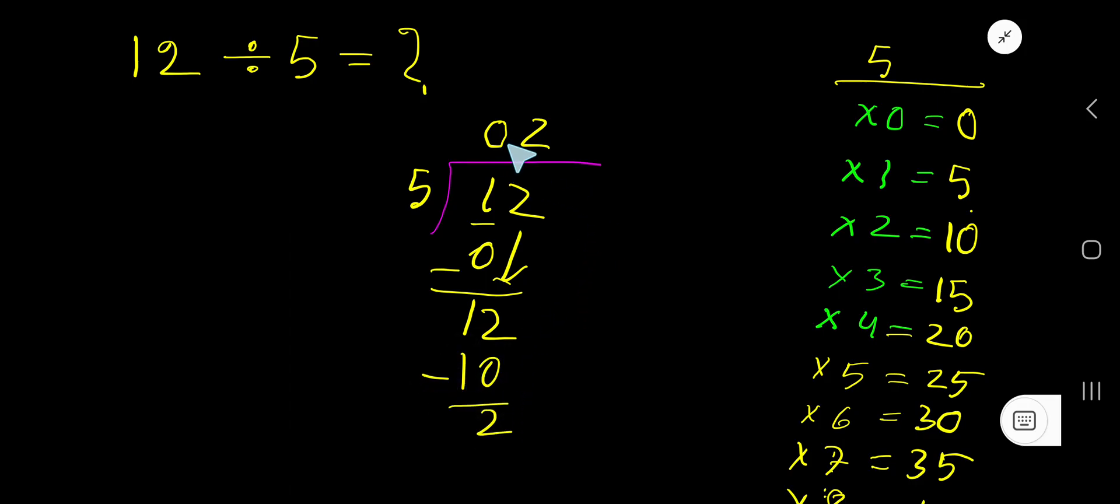Now your answer is 2 remainder 2. This 0 doesn't have any value. 2 remainder 2. But if you want to write your answer in decimal form, just convert this whole number into a decimal number. Just take a decimal, then add 0.